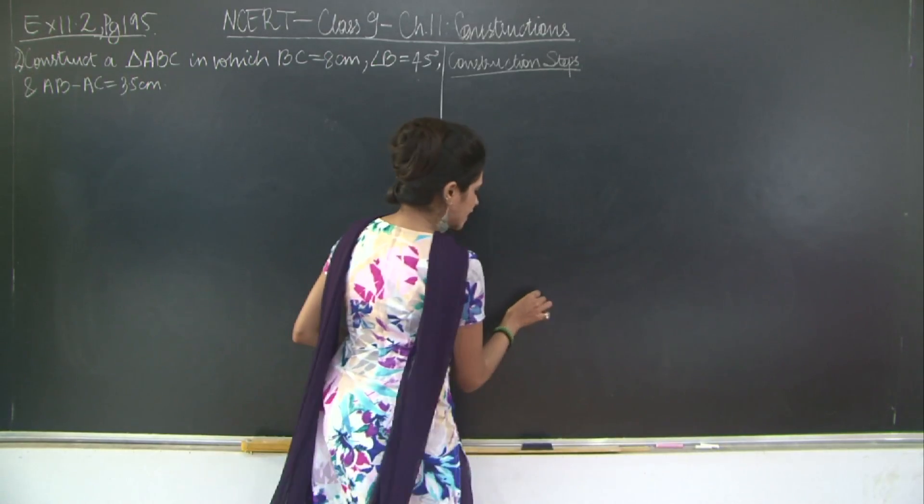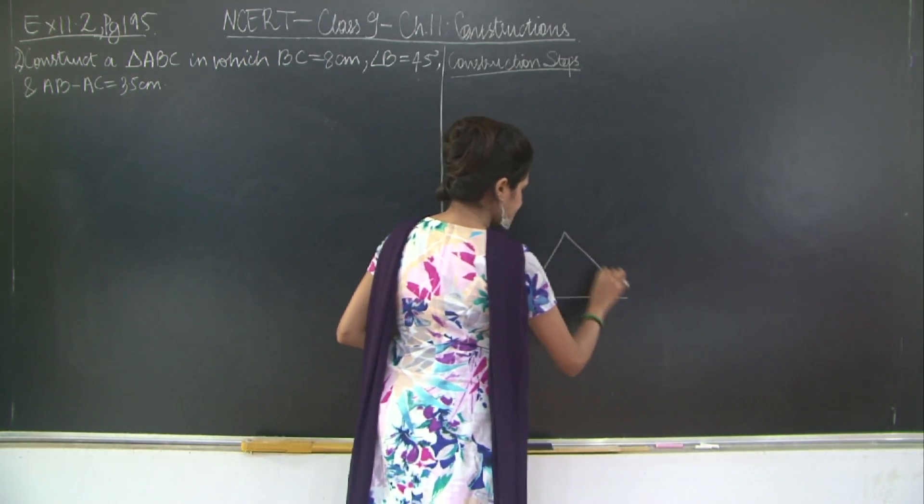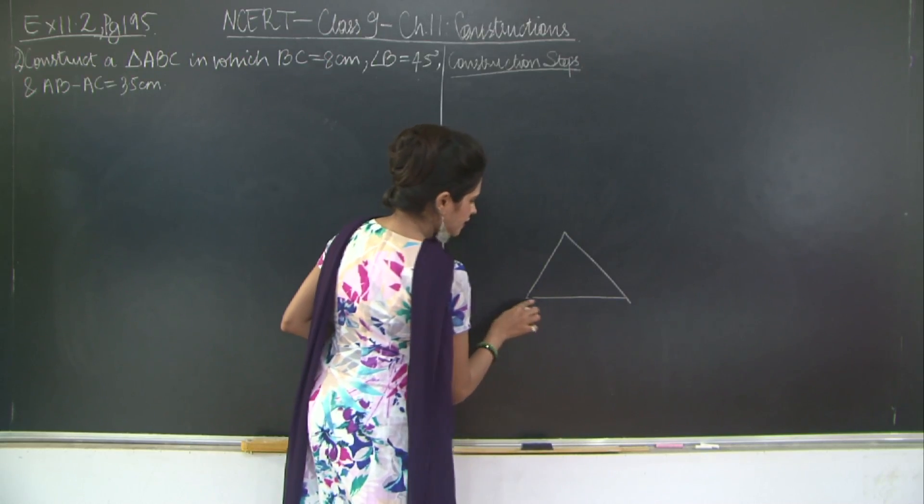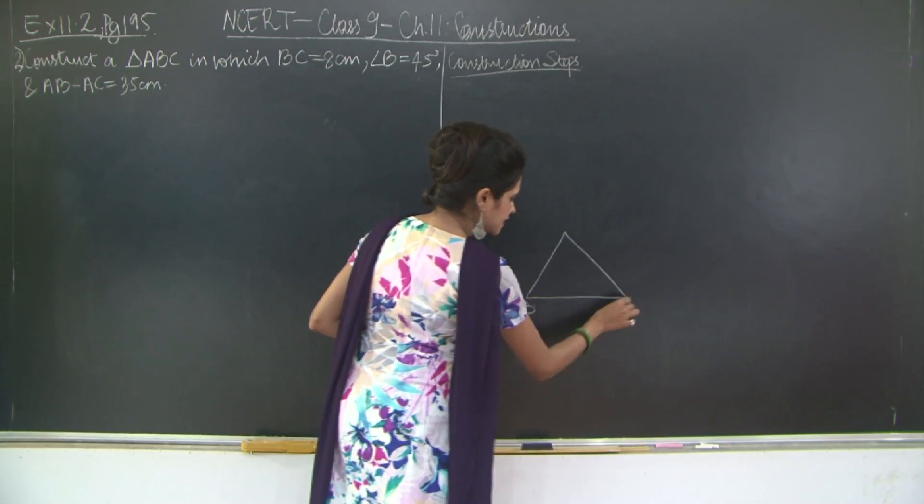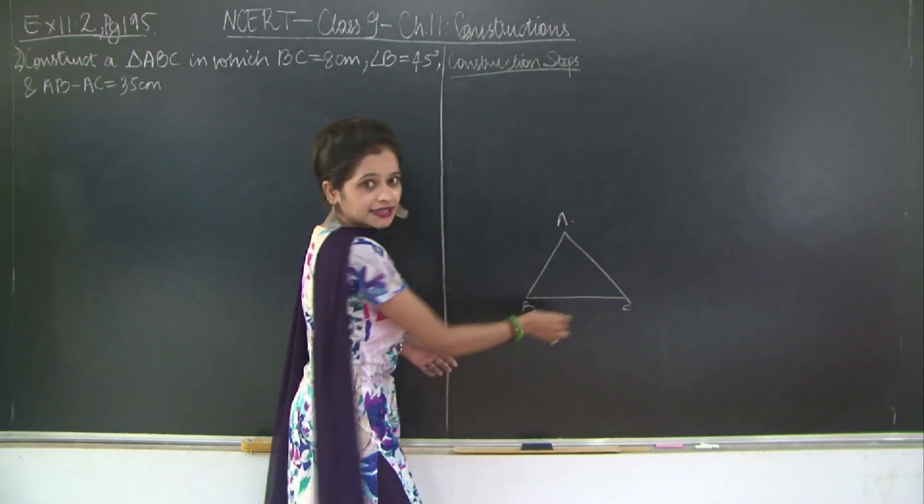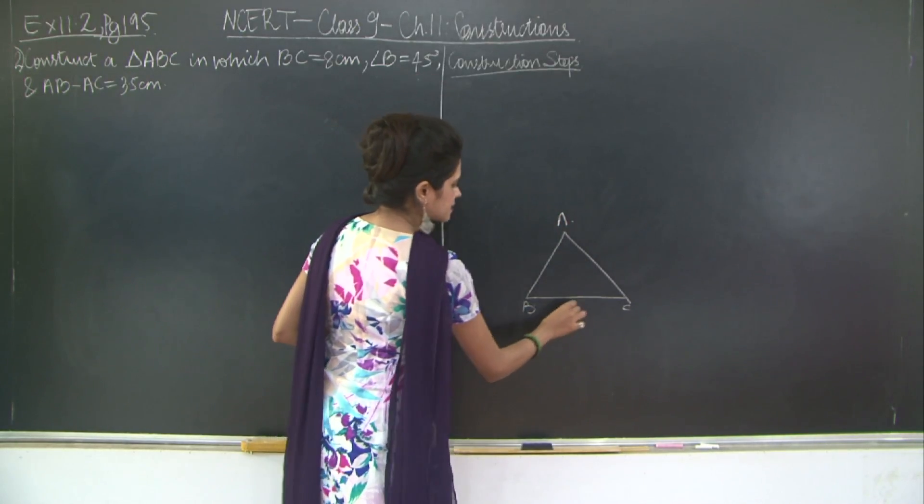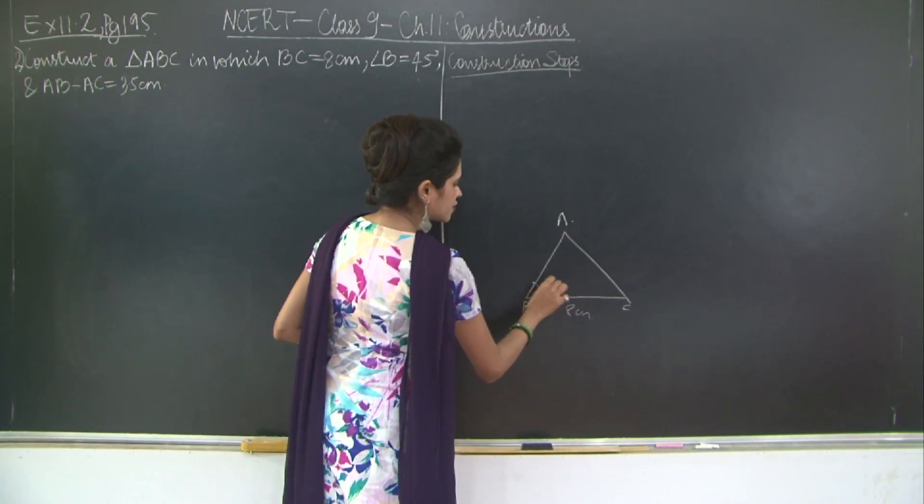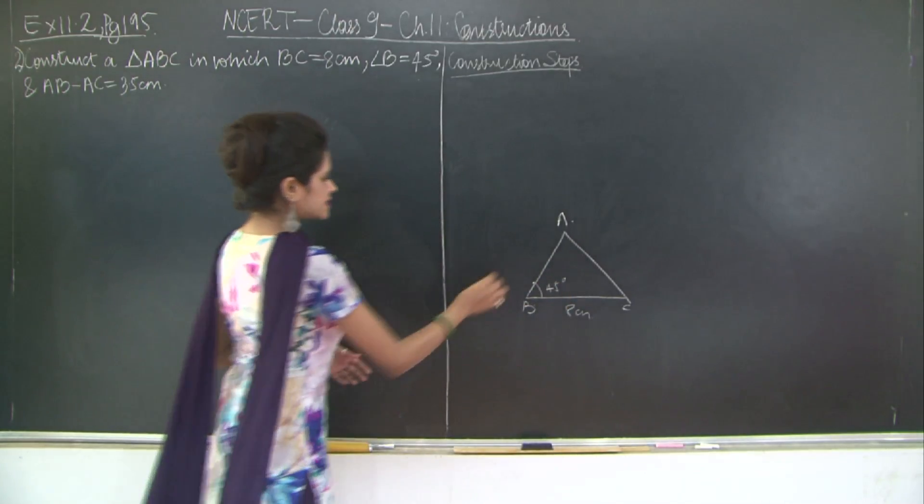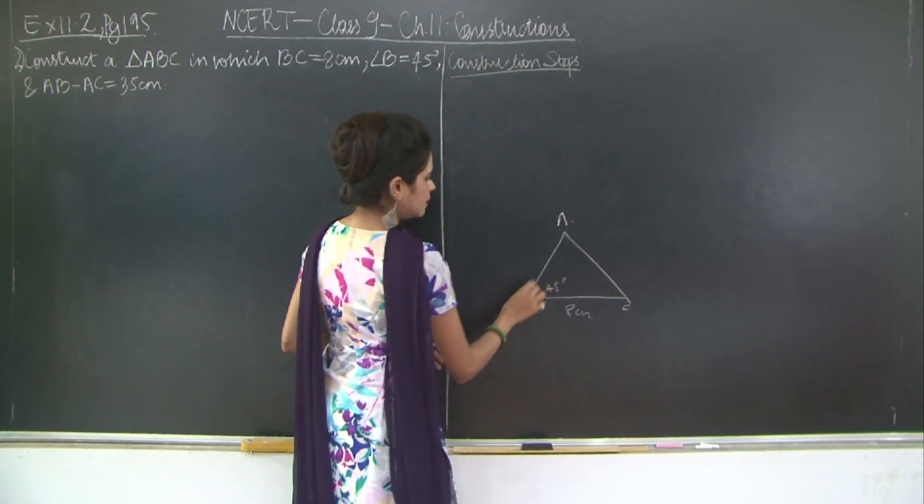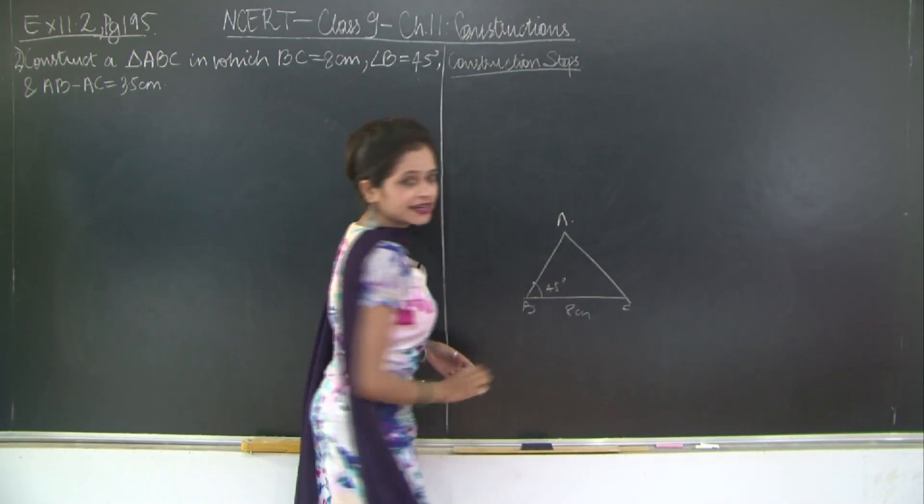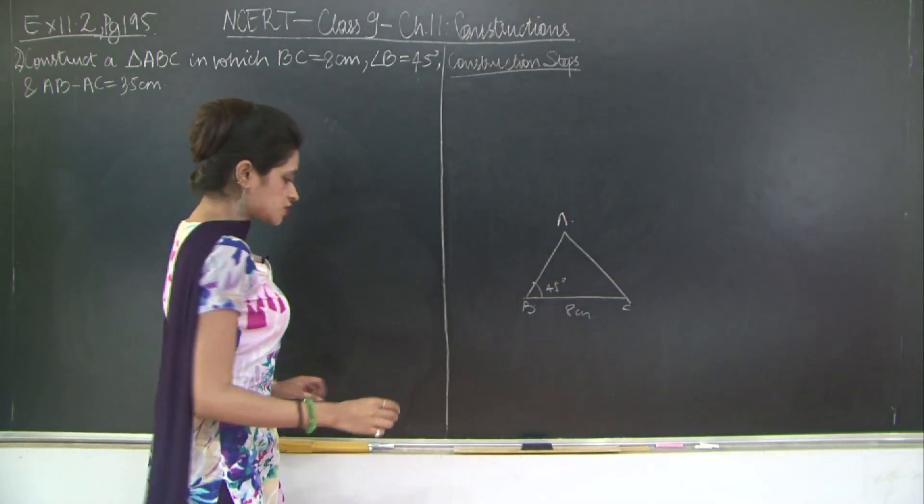What we basically need is a triangle ABC wherein BC is 8 centimeters, this angle here is 45 degrees, and the difference of AB minus this side is 3.5 centimeters.